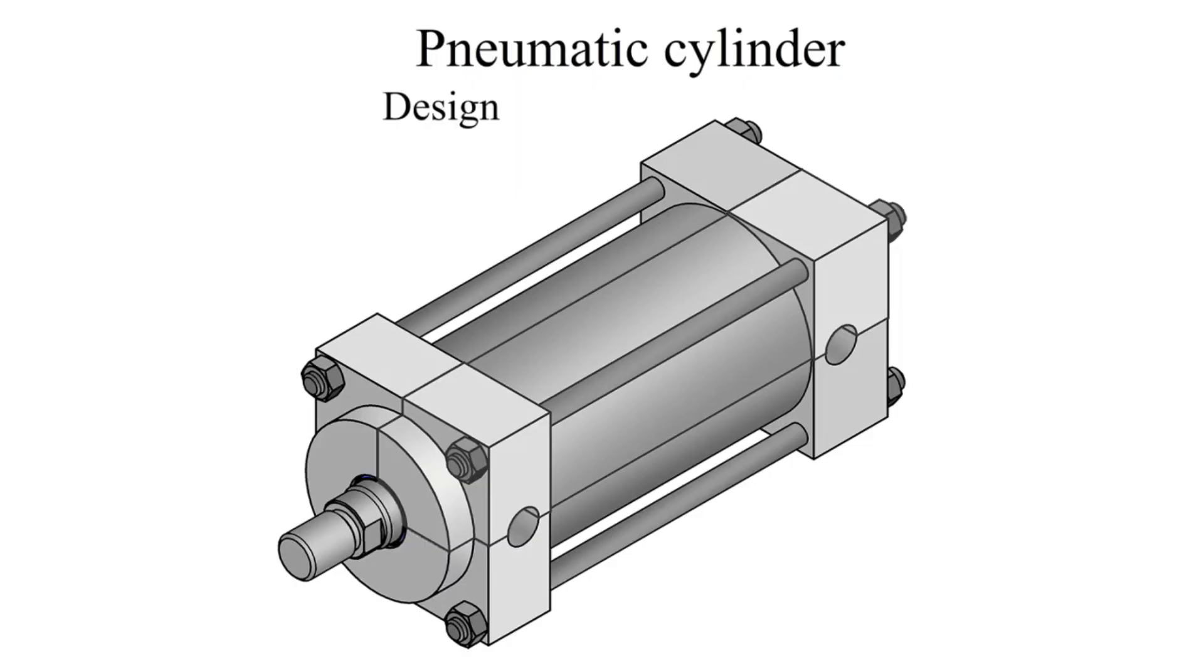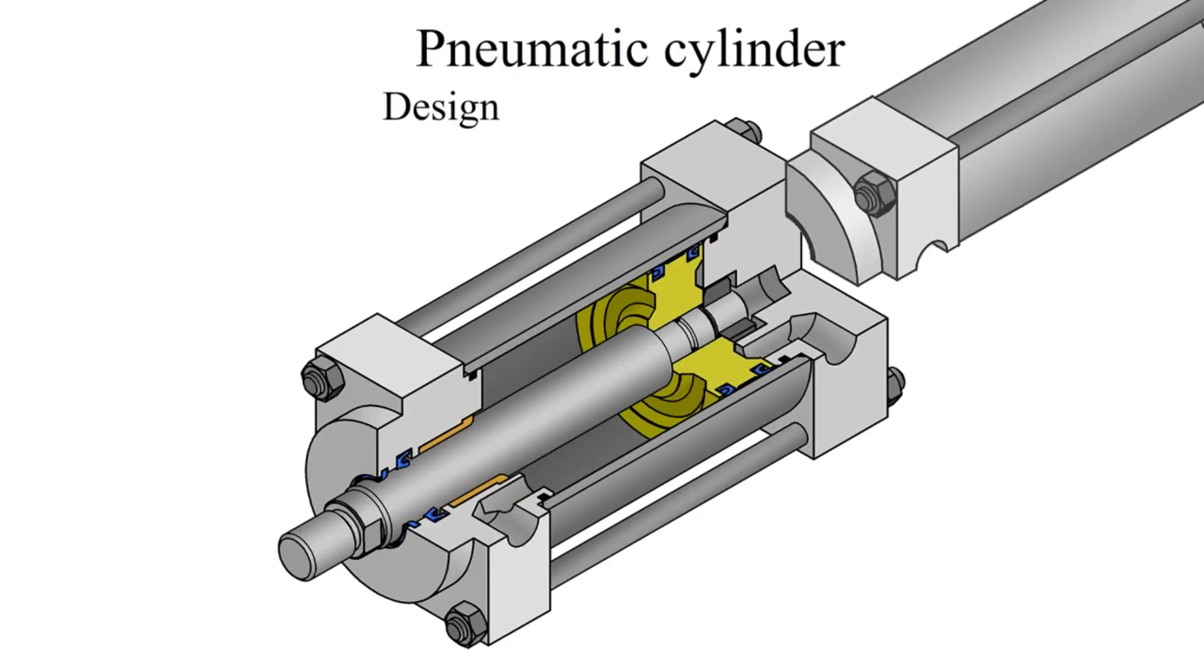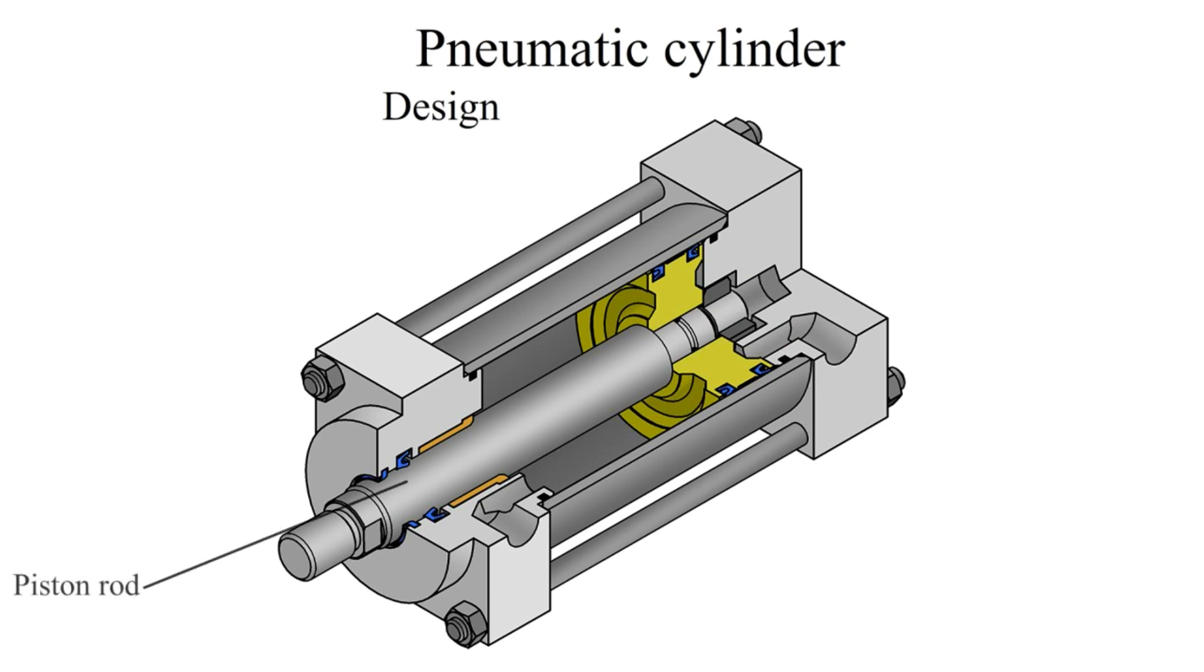Pneumatic cylinder design: The rod is a hard chrome-plated piece of cold-rolled steel which attaches to the piston. The rod is polished to provide a reliable seal and prevent leakage.